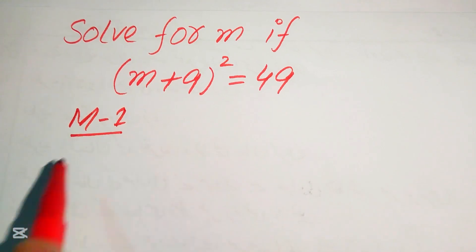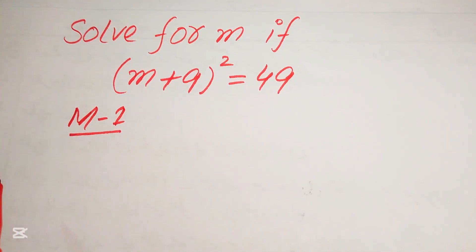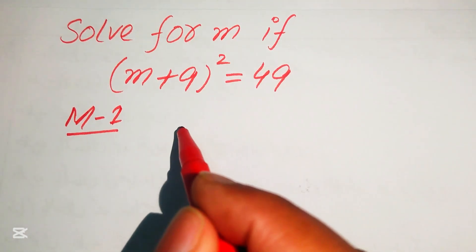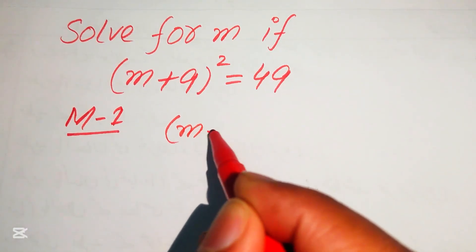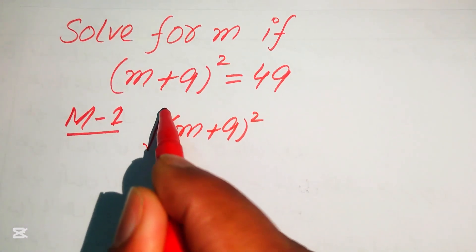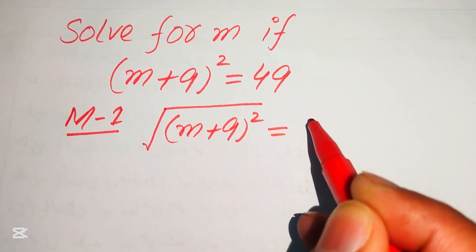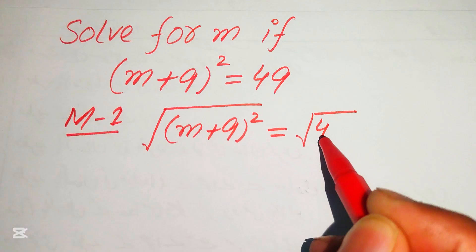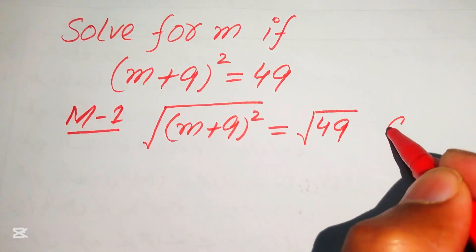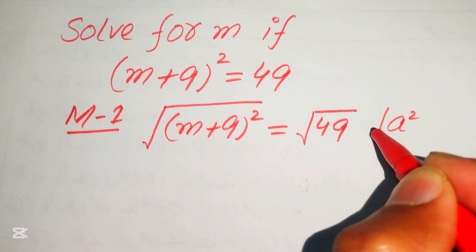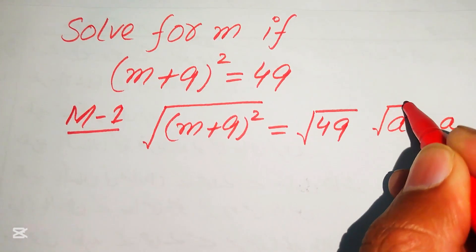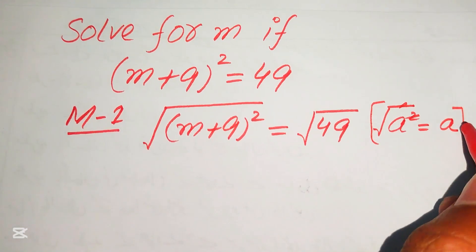In the first method we will directly take the square root on both sides. When you take the square root of (m + 9)², its square root equals the square root of 49. If we have a² and take its square root, it equals a, because the square and square root cancel each other.